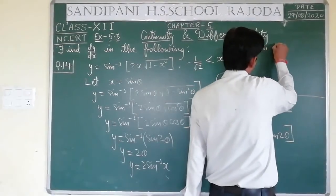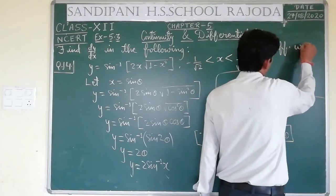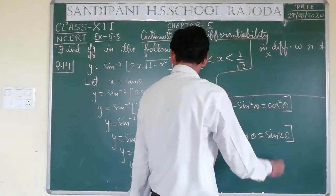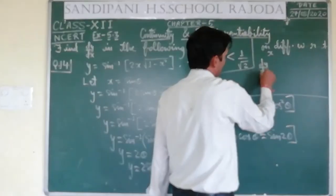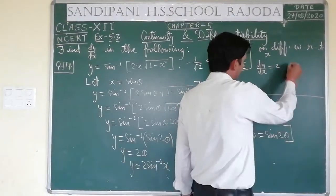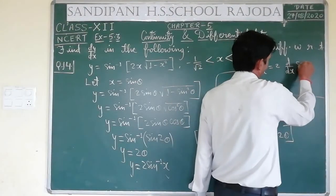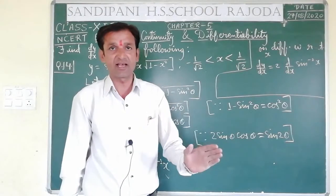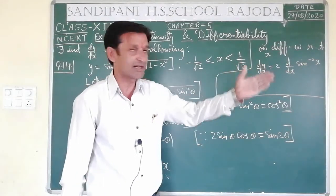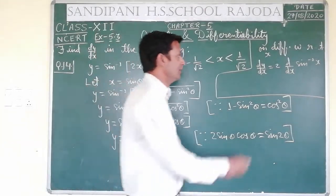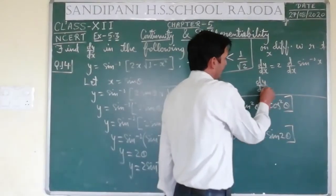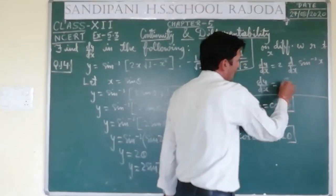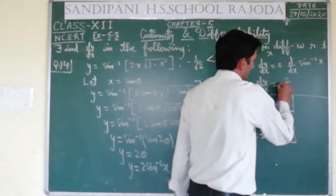यहाँ पर trigonometric substitution के through इस question को easy बना लिया। अब dy/dx calculate कर सकते हैं। On differentiating with respect to x, dy/dx = 2 · d/dx(sin⁻¹ x). sin⁻¹ x का differentiation 1/√(1 - x²) होता है। तो dy/dx = 2/√(1 - x²).